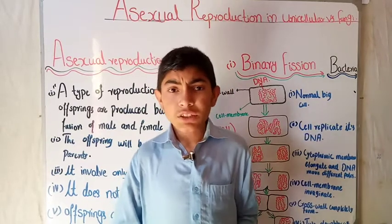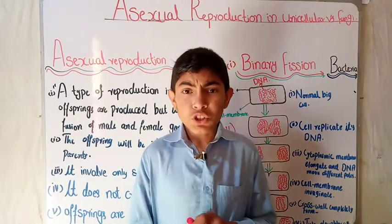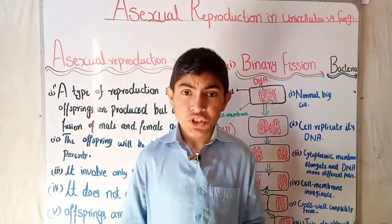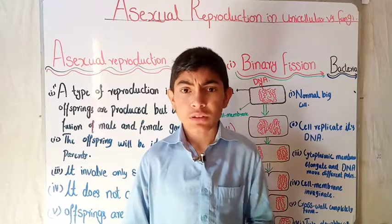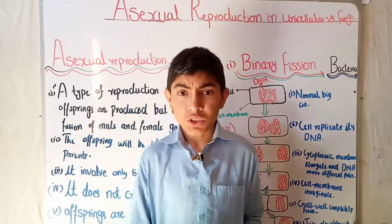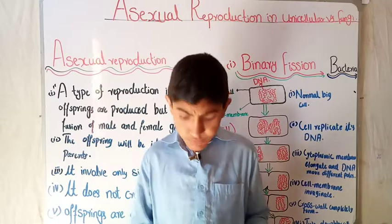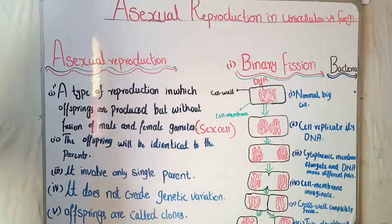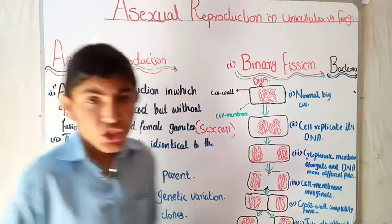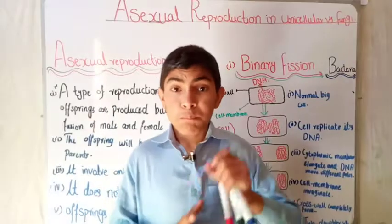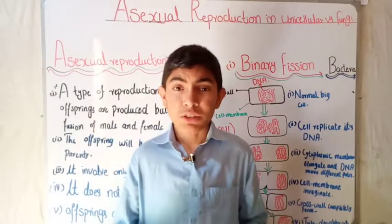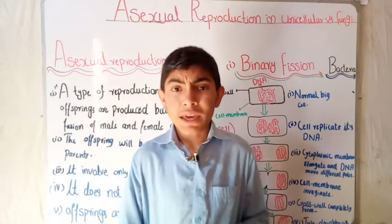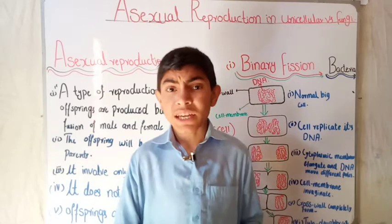Today we are going to talk about the ability of a body to reproduce its offspring before it dies. Reproduction can be divided into two branches: one is sexual reproduction and the second is asexual reproduction. But today we have to focus our study only towards asexual reproduction. Asexual reproduction is a type of reproduction through which an offspring is produced without the fusion of gametes of male and female. In this type of reproduction, no male and female are involved — only a single parent is involved.